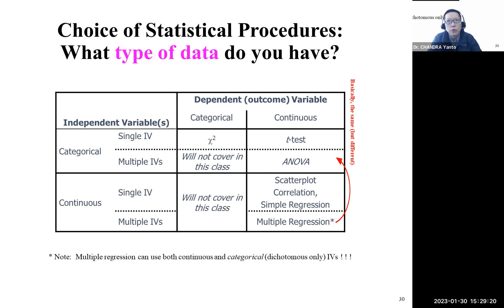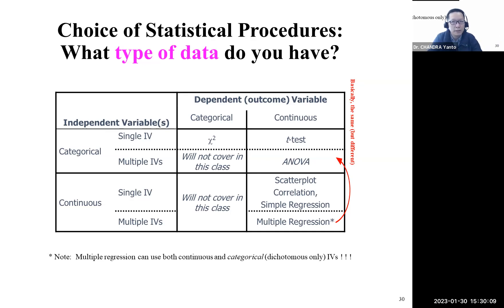When you are conducting a survey, doing experiments in the lab, in the field, or online, you will have different variables measured using different types of scales. From week one and week two, we talked about categorical, continuous, interval, and ordinal scales. Now we need to think about how you analyze data when variables are measured on different types of scales, because there is a certain procedure that tells you a certain type of data requires a certain type of statistical analysis.